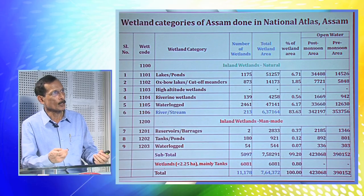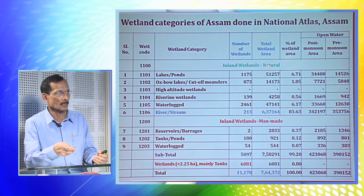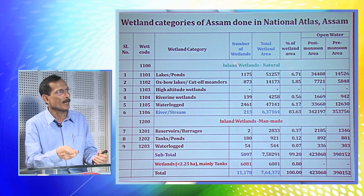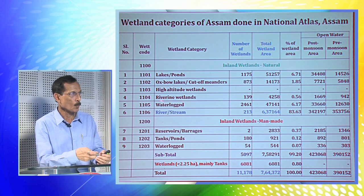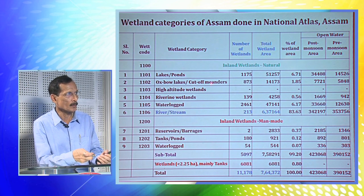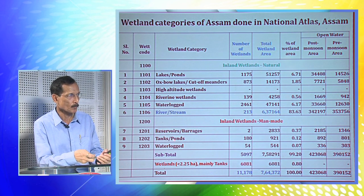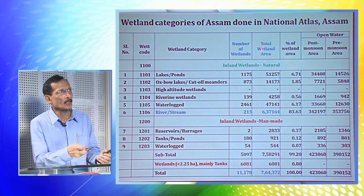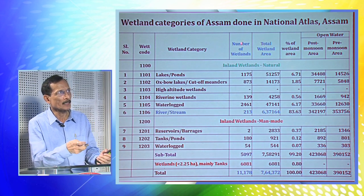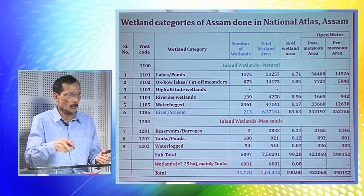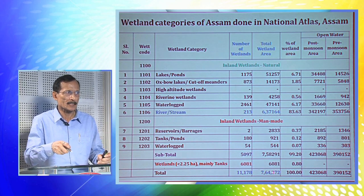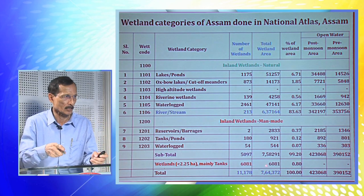In Assam's scenario, wetlands can again be divided into natural and man-made. Under the natural category, lakes and ponds, oxbow lakes, cutoff meanders, high-altitude wetlands, riverine wetlands, waterlogged wetlands, rivers, and streams have been found. In the man-made category, reservoirs, barrages, tanks, ponds, and waterlogged areas are found. Altogether, the state has 11,178 wetlands occupying 764,372 hectares of land.